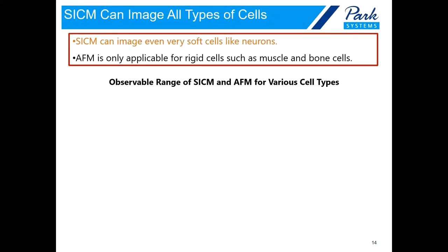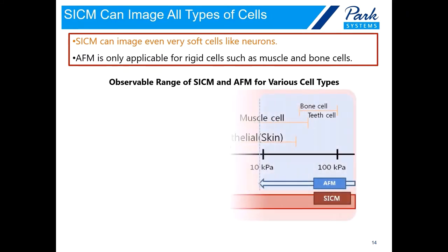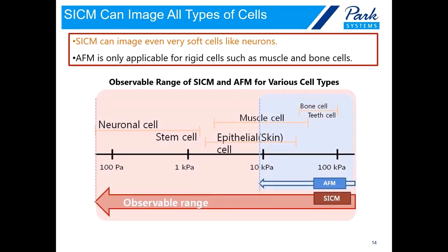After developing the SICM, we have tested a variety of cells and verified the following. The cell is soft and has different characteristics depending on its functions and purposes. The softness of the cell can be measured and distinguished by Young's modulus — the SI unit of modulus is the Pascal. Simply put, the higher the Pascal value, the more stiff the sample.